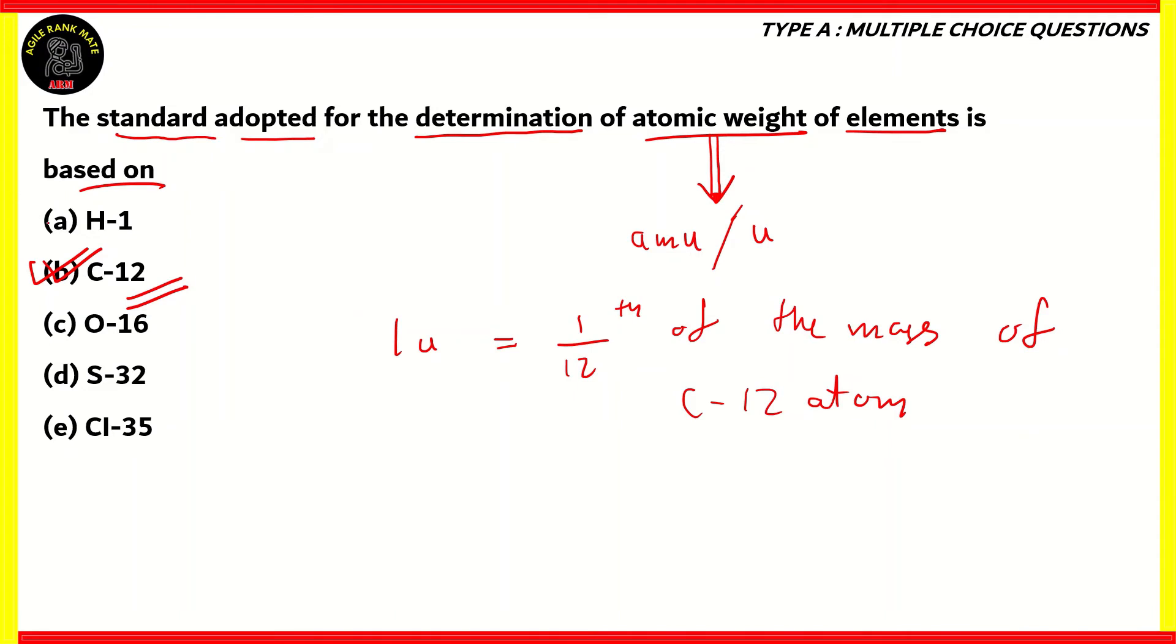So therefore, again, the idea that it's based on C-12 is again very important. So option B is the correct option. H-1 refers to hydrogen, O-16 is oxygen, S is sulfur, Cl is chlorine. Again, all of these are elements. However, the element that bases the determination of atomic weight is carbon, and in its most stable isotope, which is carbon-12.